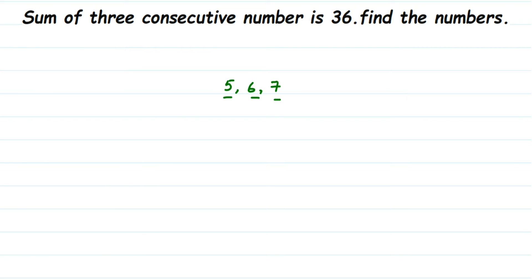If I take an example like 10, 12, and 14, these numbers are not consecutive because you can see there's a gap between them. After 10 there is 11 which I have not written; after 12 we have 13 which I have not written. So there's a gap between the numbers, meaning this set is not consecutive. There should be no gap between the numbers for them to be called consecutive numbers.